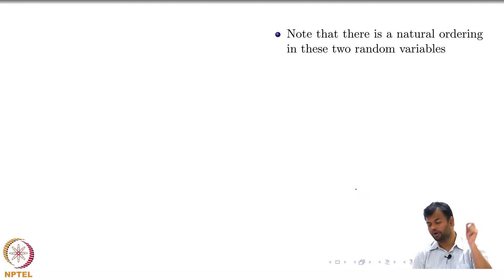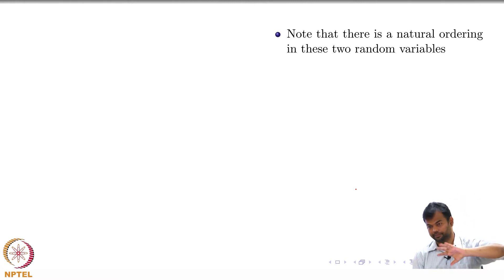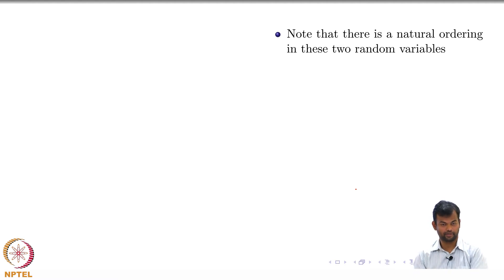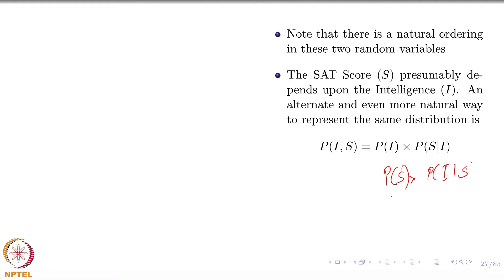There is a natural ordering between these two random variables — intelligence and SAT score. You could think that SAT score depends on intelligence. If you write the chain rule, there are two possibilities: P(S)·P(I|S) or P(I)·P(S|I). You would probably choose the latter, because asking for the probability of SAT score given intelligence makes more natural sense.